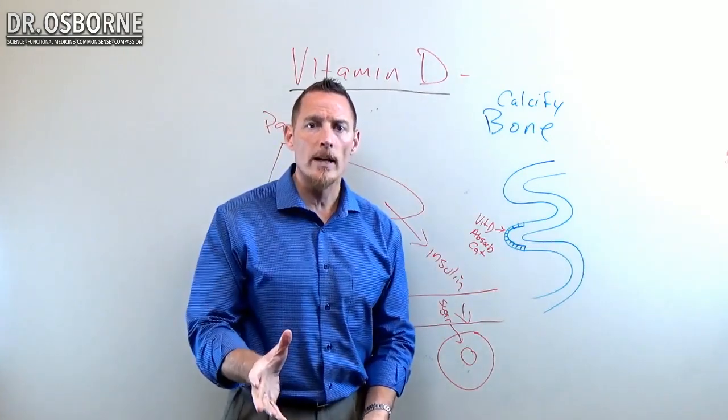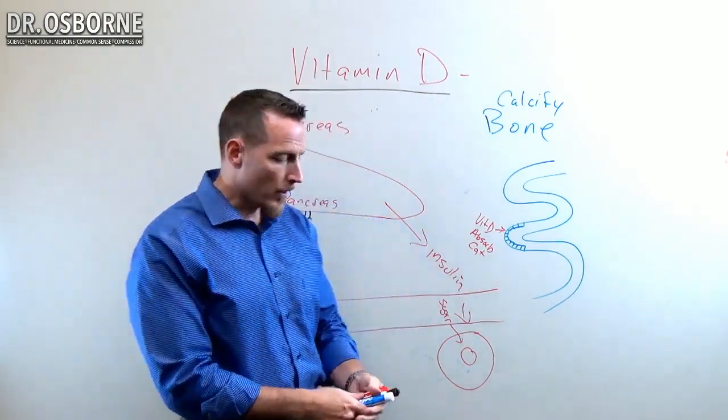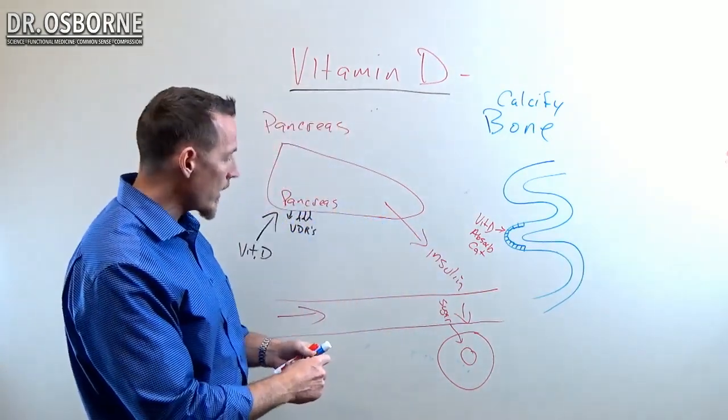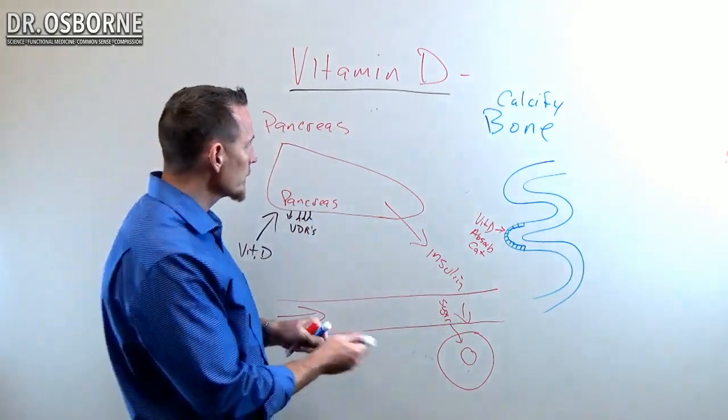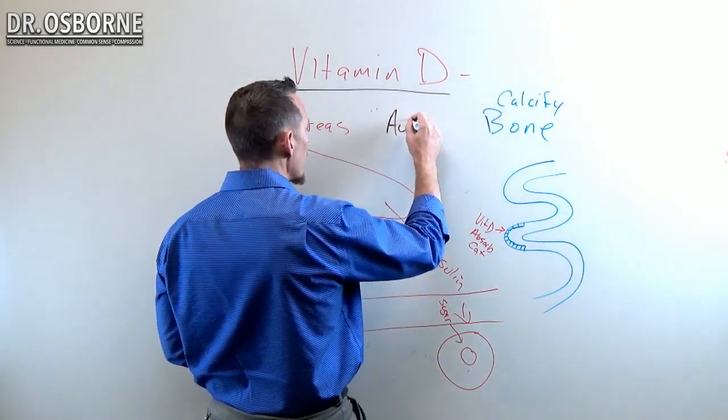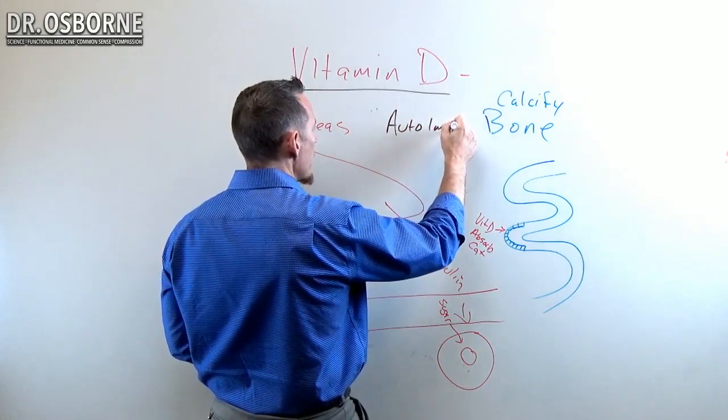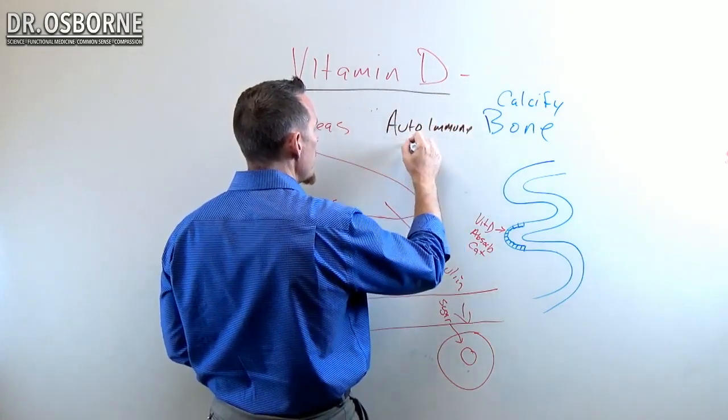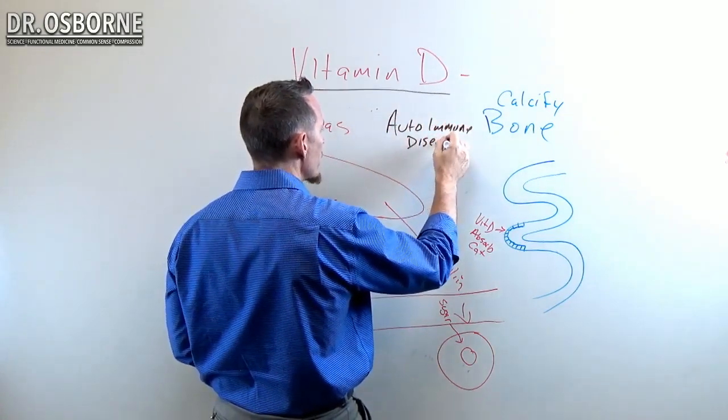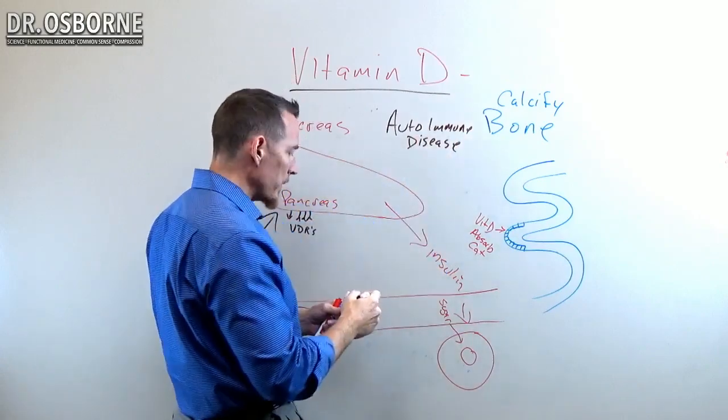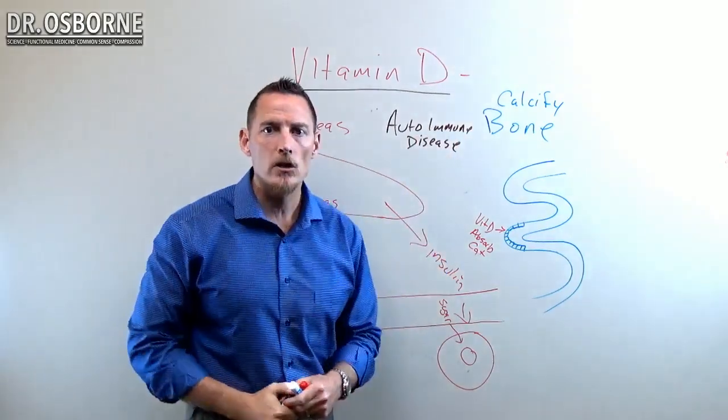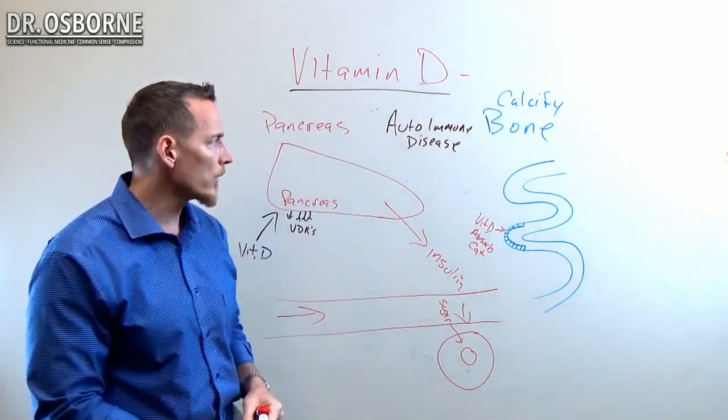Vitamin D has been shown to regulate the immune system. I mentioned autoimmune disease as a side effect of vitamin D deficit, and this goes back to what I was saying earlier about vitamin D being important for regulating the strength and weakness of immune cells.